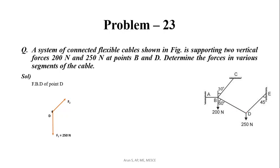Similarly, the BD segment force acts along the BD line from point D — let this be force F3. Now, this angle is 45 degrees. The angle for segment DE is 90 degrees, and combined with 30 degrees gives 120 degrees for one of the angles at point D.